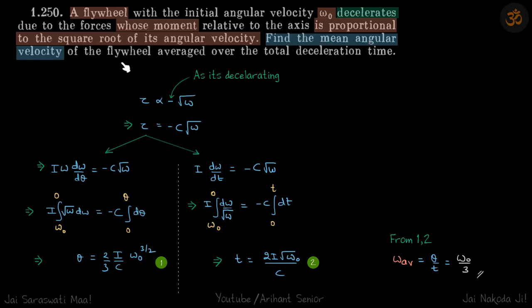We need to find the mean angular velocity, so we need to calculate the total angle turned and then divide that by the total time taken. That's how we will arrive at our answer.